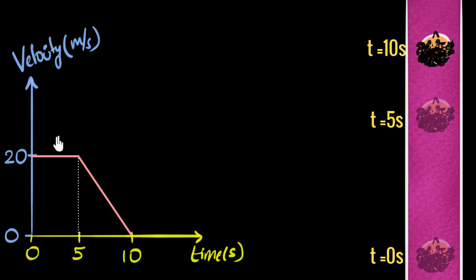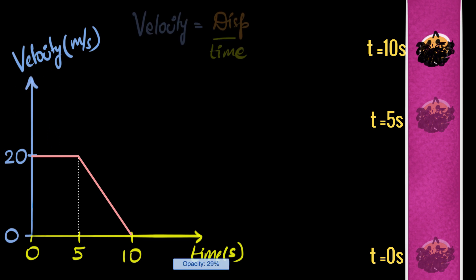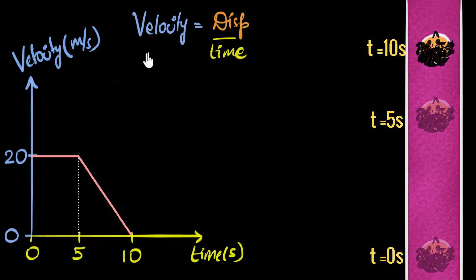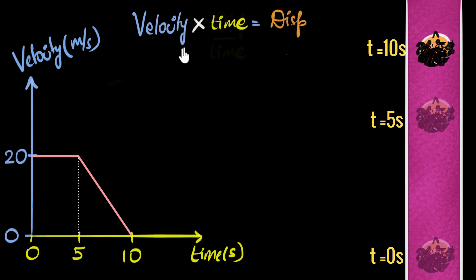So how do we calculate it? We can start with what we know about velocity. We know velocity is displacement over time. Velocity is just speed with direction — if I said the kid is moving at 20 meters per second, that's speed; if I say she's moving at 20 meters per second upwards, that's velocity. We need to calculate displacement, so we multiply both sides by time, giving us displacement equals velocity times time. For the first five seconds, velocity is a constant 20 meters per second, multiplied by time five seconds.